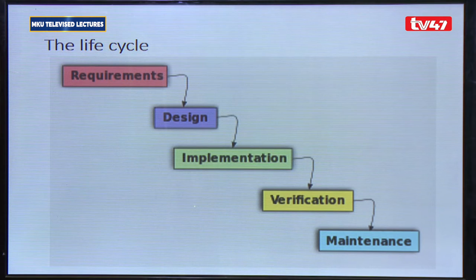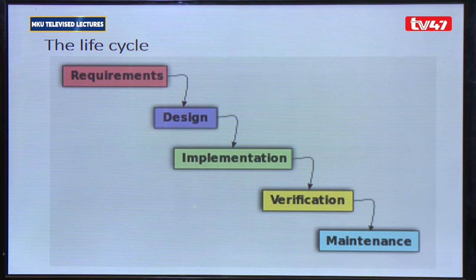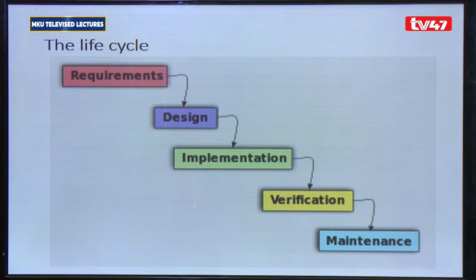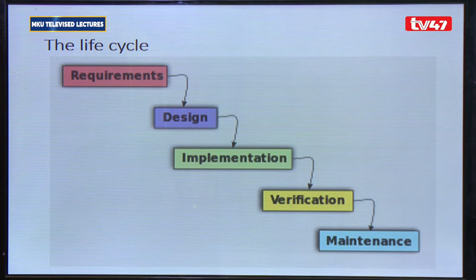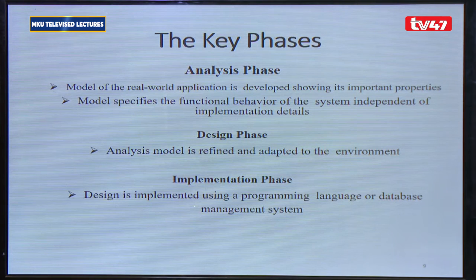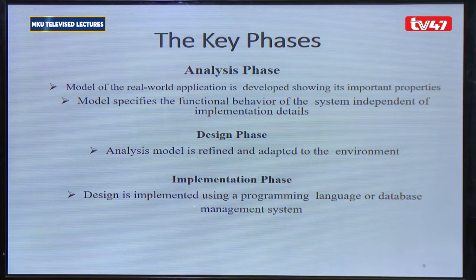What we do in the first two stages really determines the kind of implementation. The other stages include verification — implementation and coding, the programming part. You cannot code before you draw your system abstraction. Verification entails testing the system to determine whether it is doing as it was intended and as specified in the analysis phase.